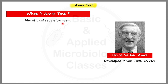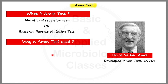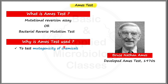The Ames test is a kind of mutational reversion assay, also called a bacterial reverse mutation test. The Ames test is used to test the mutagenicity of chemicals. Mutagenicity is the ability to cause mutations. For example, suppose in a laboratory we have formulated a new drug and we would like to know whether that drug is able to cause mutations or not.